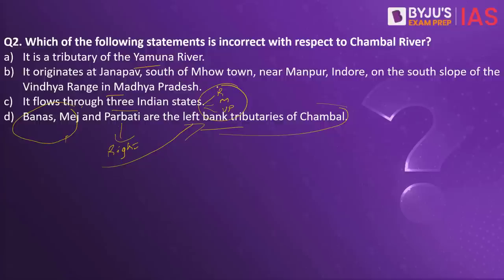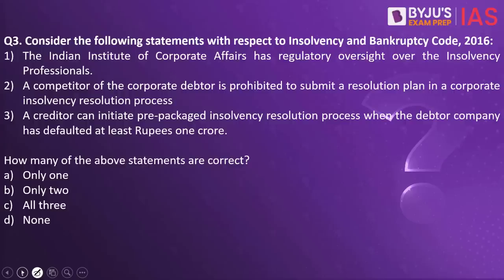The National Chambal Sanctuary is located along the river on the trijunction of Rajasthan, Madhya Pradesh, and Uttar Pradesh. This river is also known for the critically endangered gharial and the endangered Ganges river dolphin. These are some of the important facts with respect to the Chambal river. Now let's look into the next practice question.